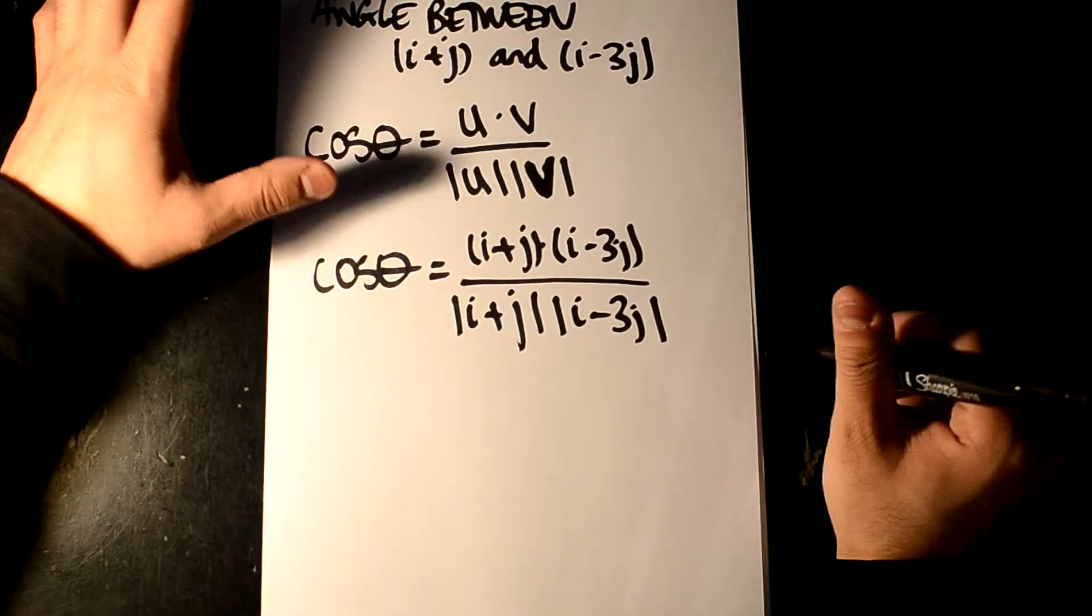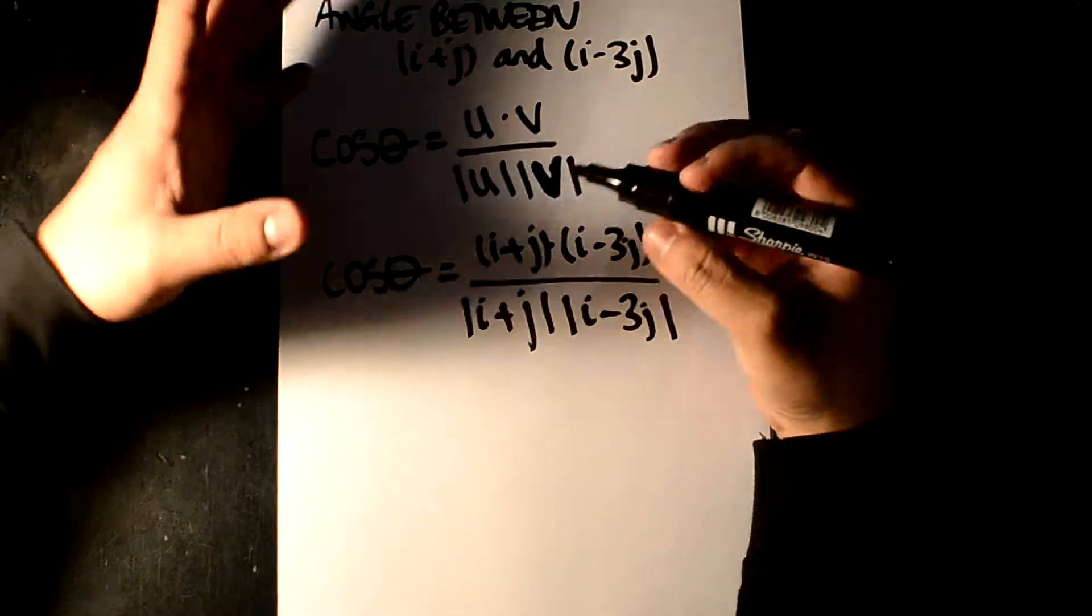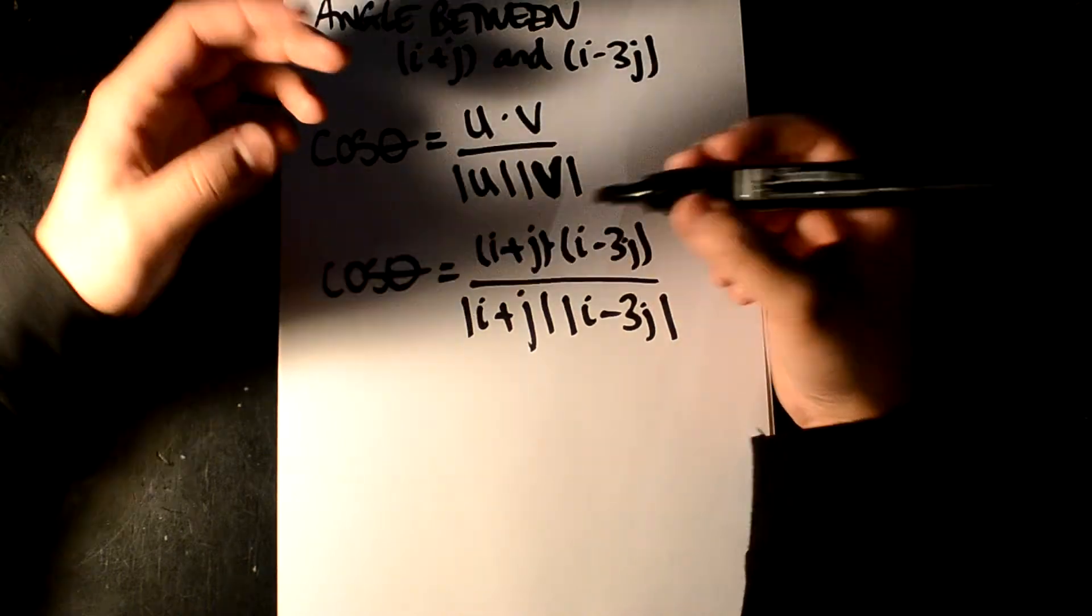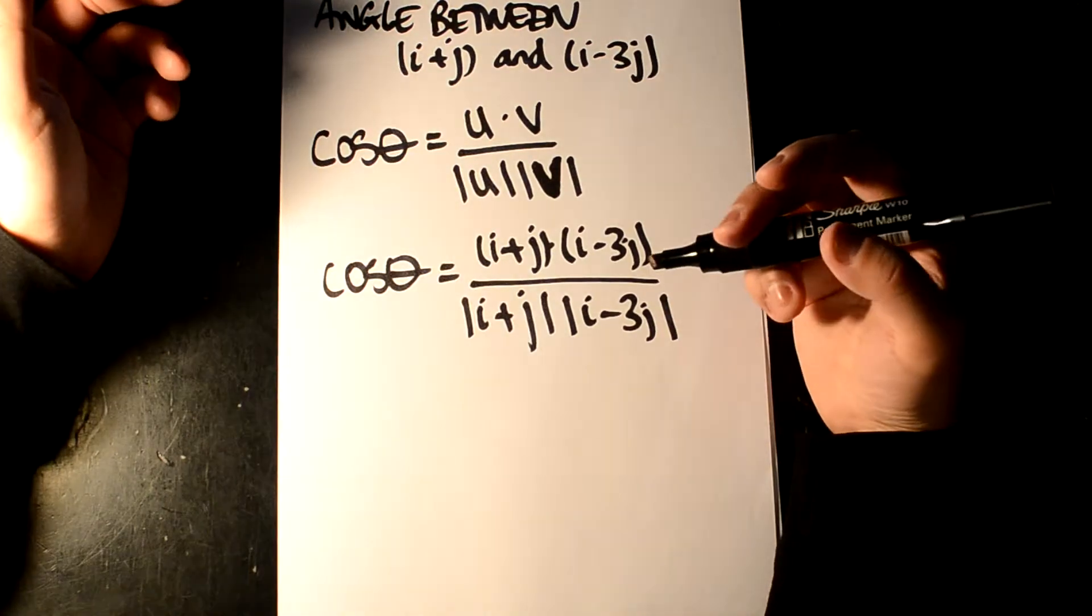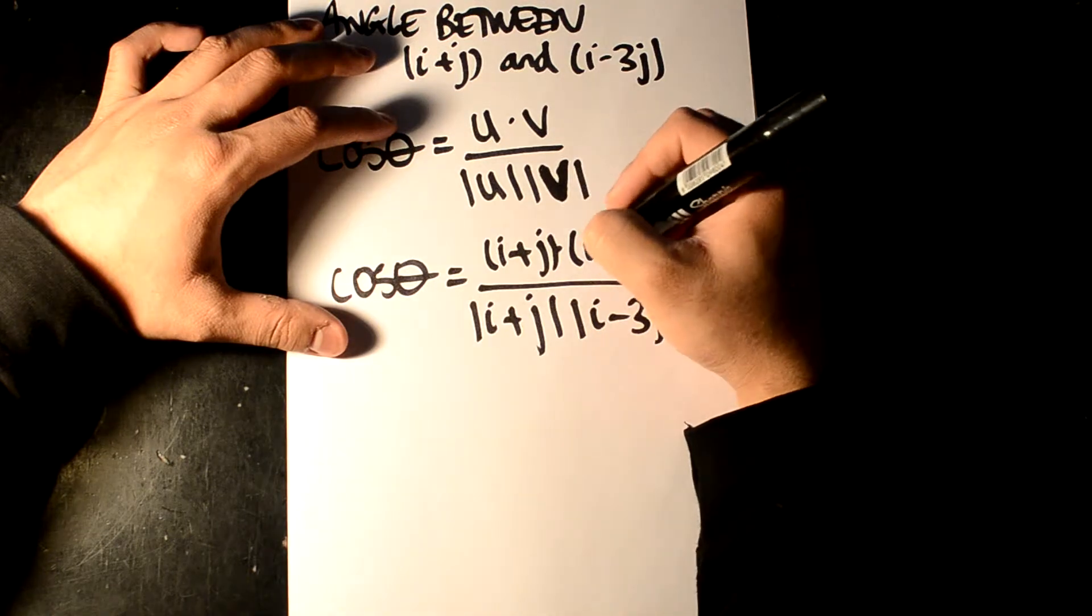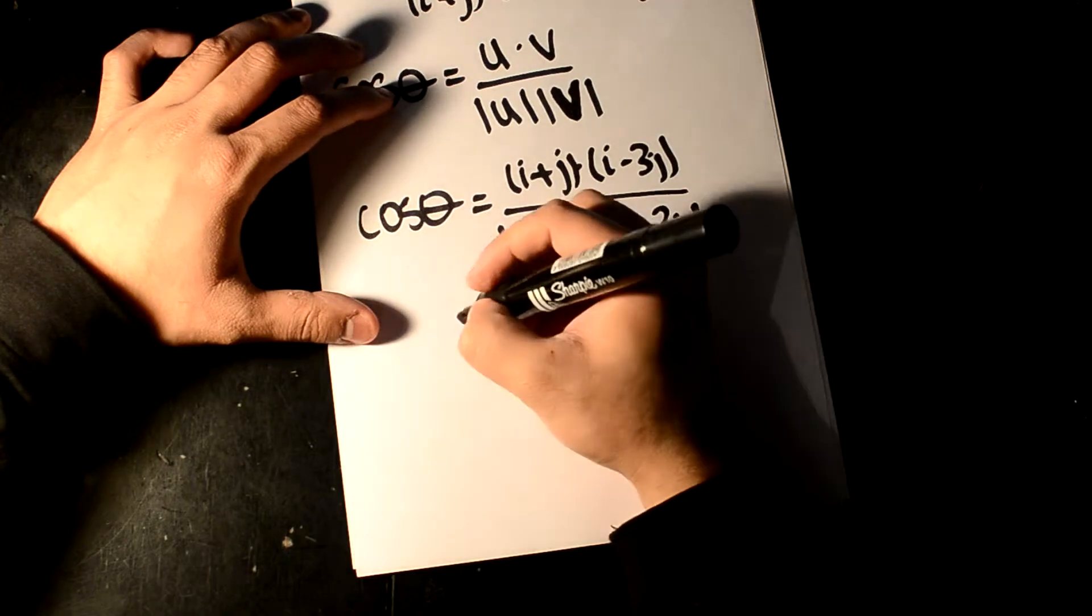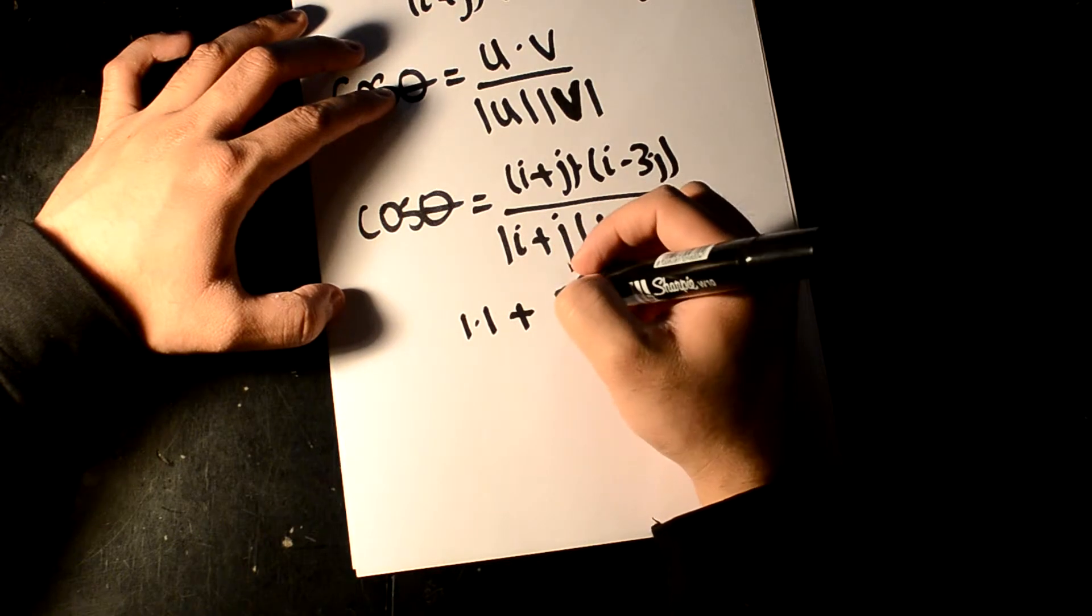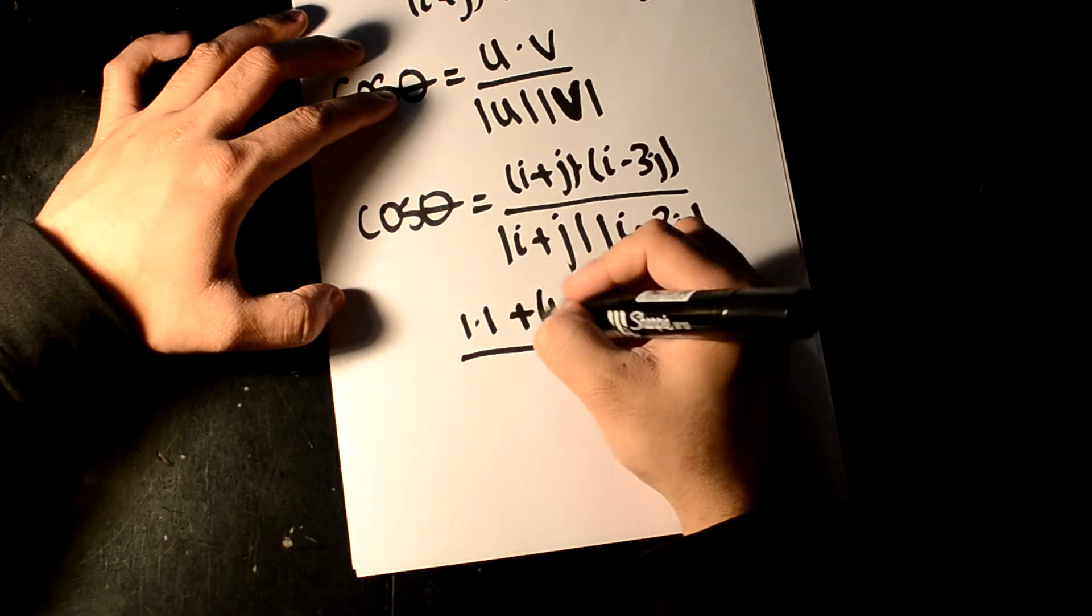So in the previous video, we went over how to do the dot product. And all that is is the first unit times the first unit of the second vector and the second unit times the second unit of the vector. So it would be this times this plus this times this. So as you can see, we're going to get 1 times 1 plus 1 times minus 3 on our top here.